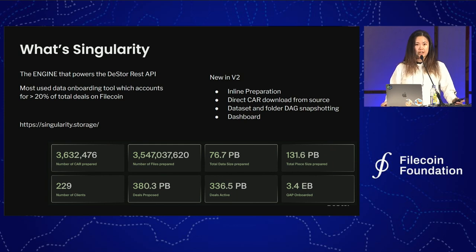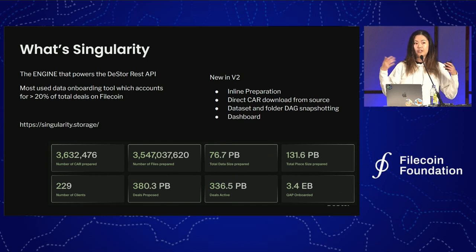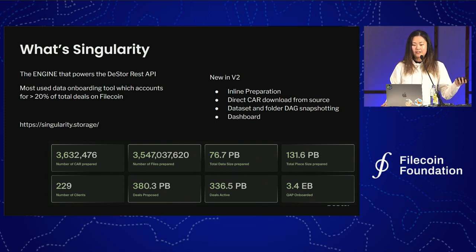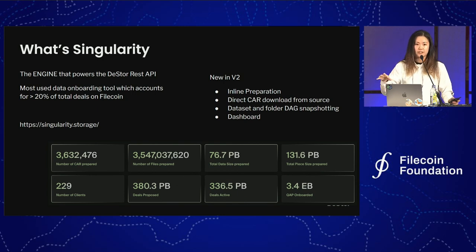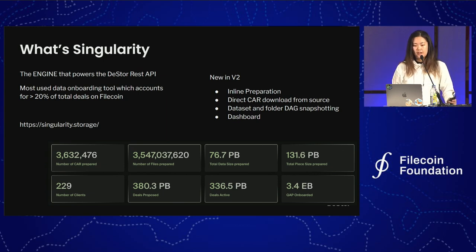This new feature in Singularity V2 is called inline preparation. The CAR files are the same content as the original files. If you know the algorithm of how the CAR files are converted—the mapping from original files to CAR files—then you don't really need to store the extra copy. This cuts down the number of total replicas from four to three, because Singularity knows this mapping. It saves you space and time, because you no longer need to write the CAR file to your disk. Reversely, if you want to save the CAR files and not the original files, you can do that too, because this mapping can be reversed—it's bidirectional.